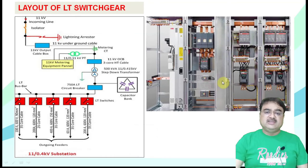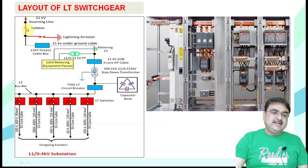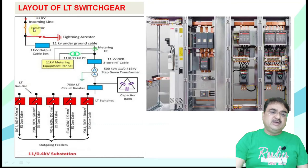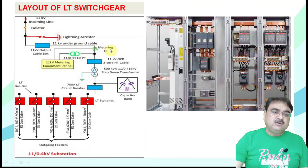What you can see here is called the bus bar. After that, there are switches and fuses in many combinations. Looking at this line diagram: there is an 11 KV supply feeder, followed by an isolator — if we need to isolate it and do not want the supply, we can switch it on and off. After that there is a lightning arrester, and then an output cable box.